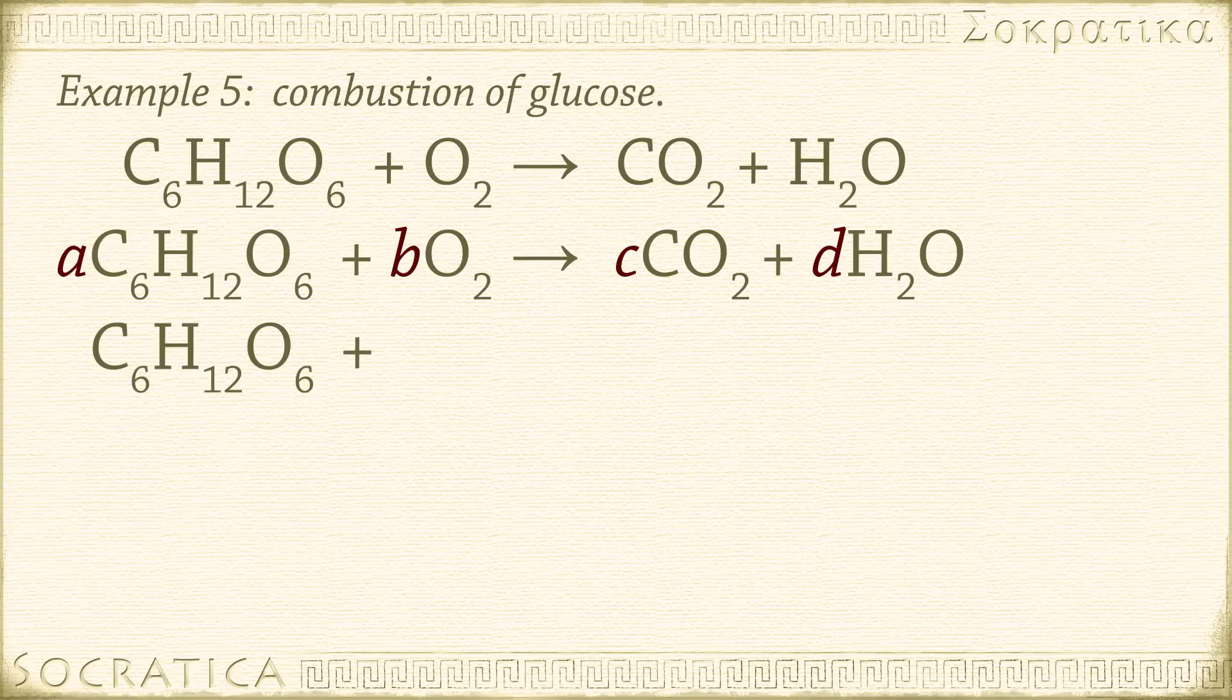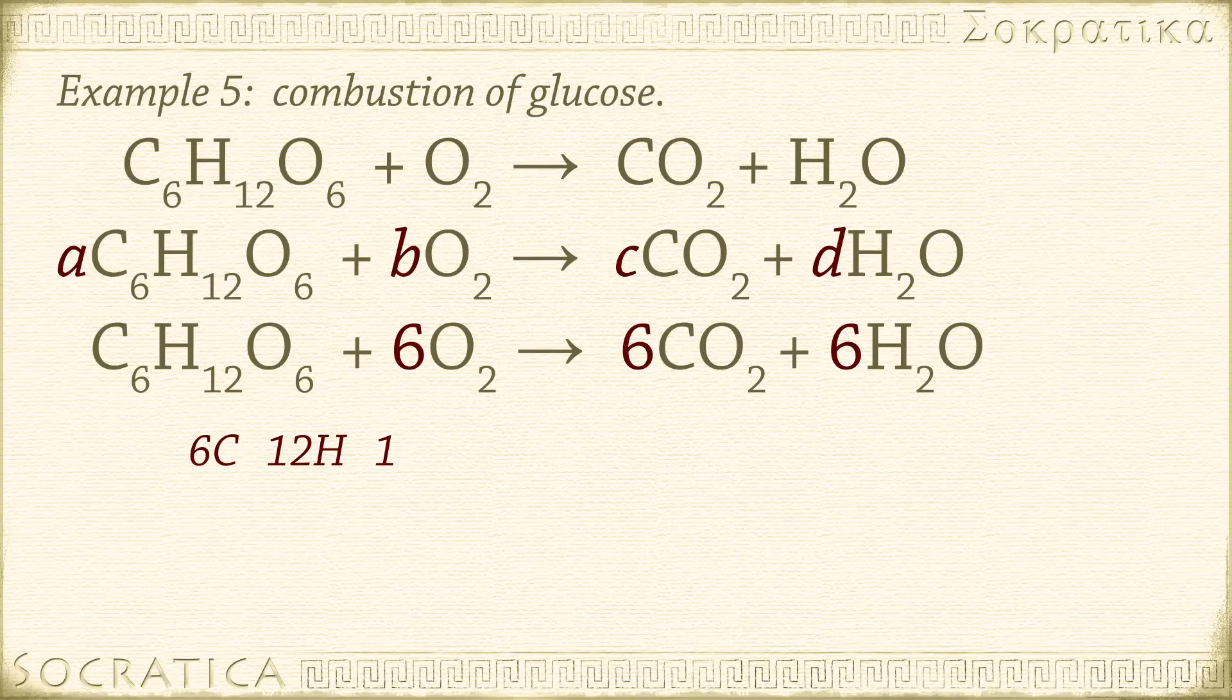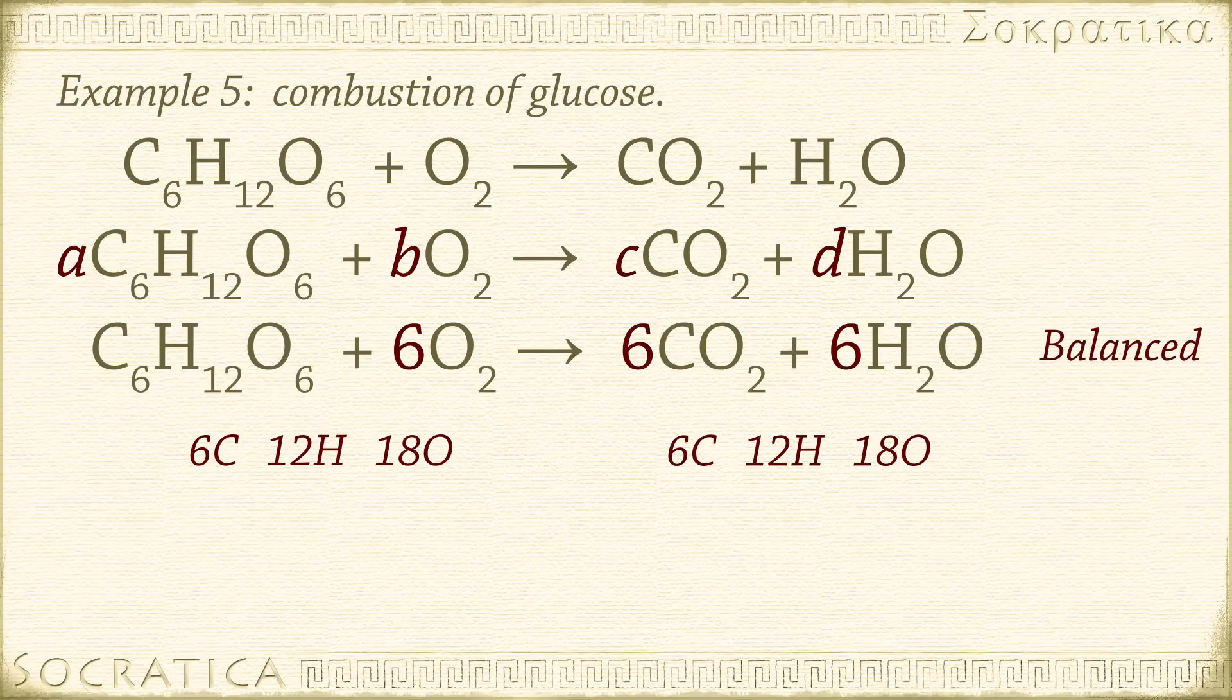Plug in these coefficients into our first equation. C6H12O6 plus 6O2 yields 6CO2 plus 6H2O. Check your work by checking the number of atoms on each side. 6C, 12H, 18O on the left, 6C, 12H, and 12 plus 6 equals 18O on the right. Balanced.